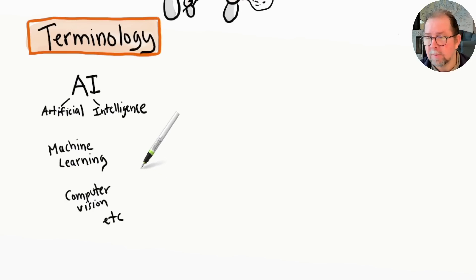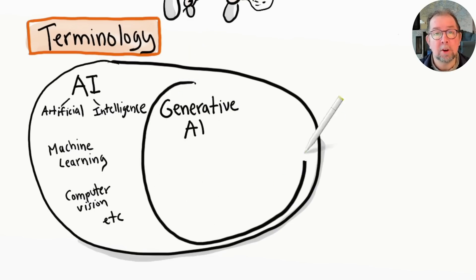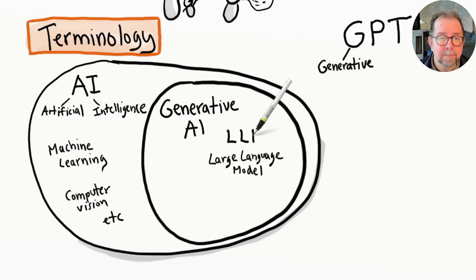Whenever you see a YouTube recommendation or a web search result, or whenever you get a credit card transaction approved, that's traditional AI in action. Generative AI is AI that generates new, original content rather than just finding or classifying existing content. That's the G in GPT, for example.